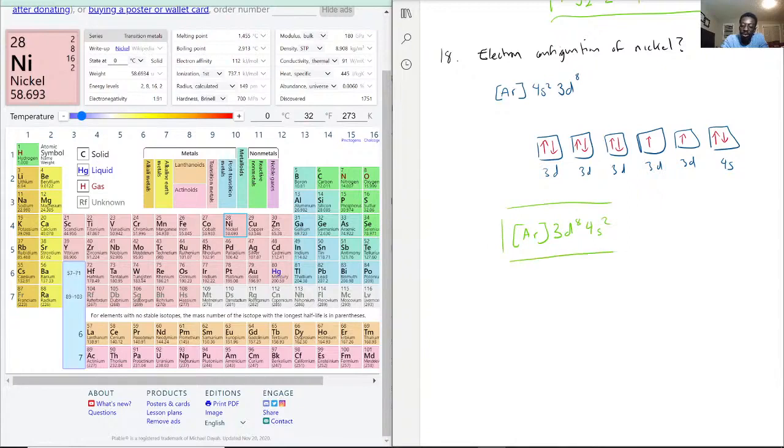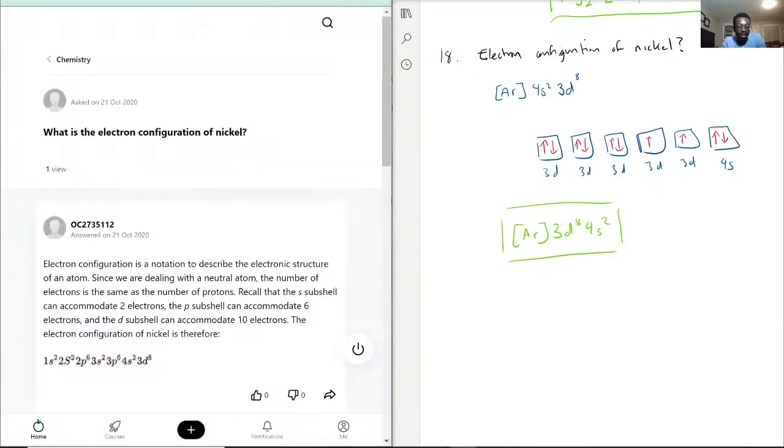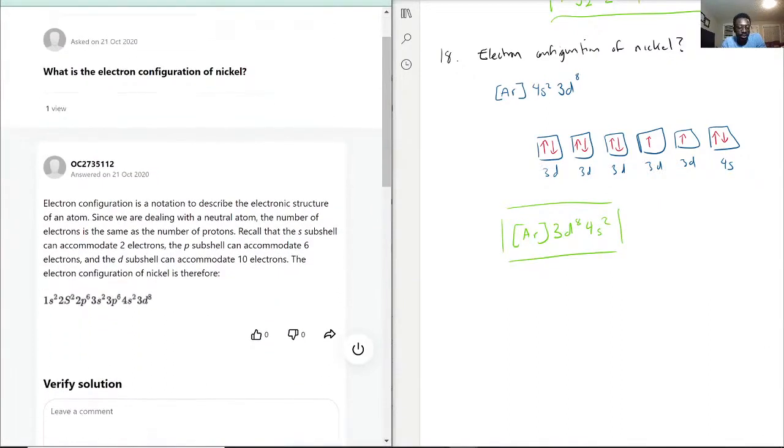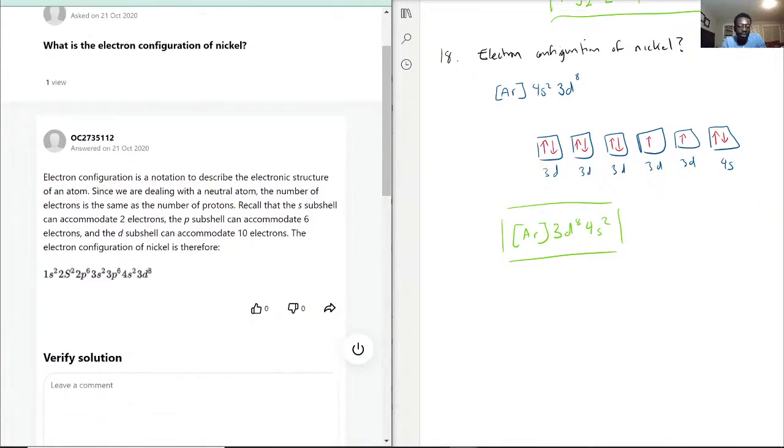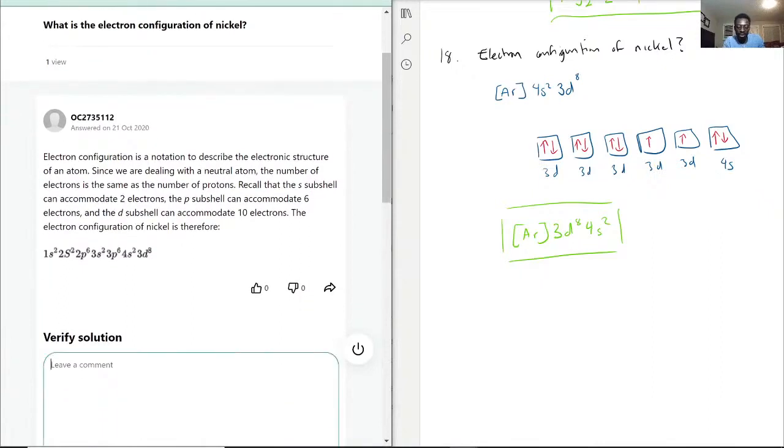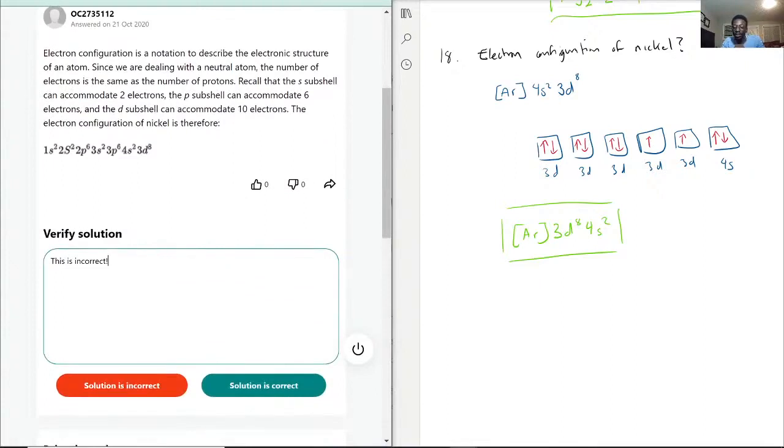Hopefully this one is correct. Let's see. So they put 4s2 3d8. You want to make sure that your lowest number is always in the front first, so this is technically incorrect. I'm gonna stress it again: make sure you have your numbers in order.